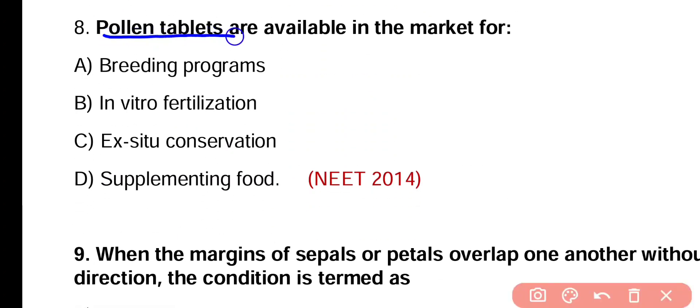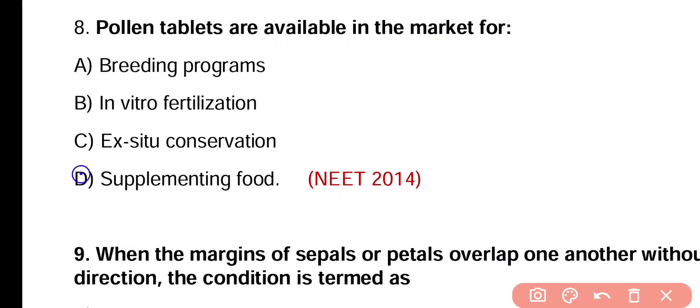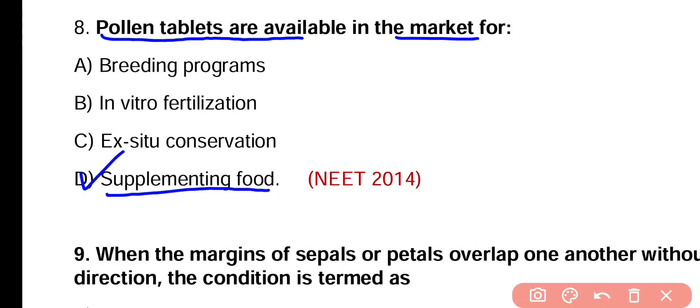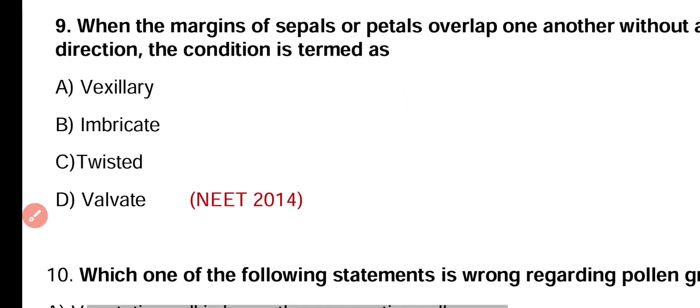Question number eight. Pollen tablets are available in market for breeding programs, in vitro fertilization, for ex-situ conservation, or for supplementing food. Correct answer is option D. Pollen grains are rich in nutrients, so pollen tablets are available in the market for supplementing food for athletes as well as race horses.